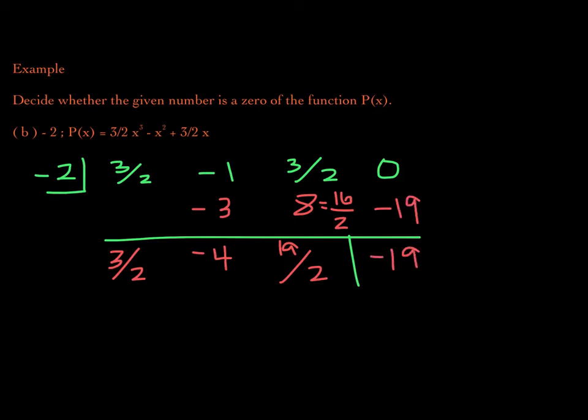The fact that this remainder is not 0 tells us that negative 2 is not a zero of function p. Graphically speaking, negative 2 would not be one of the x-intercepts. This is using both the remainder theorem and the factor theorem that we've studied.